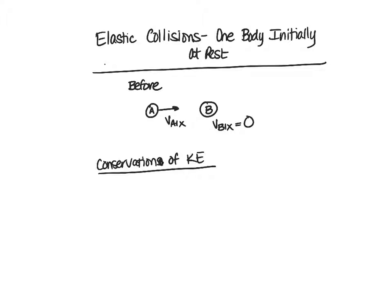We have two objects. Object A and Object B are going to collide. We are going to make this a one-dimensional problem, so everything's going to move along the x-axis. The initial situation is body B is at rest, and body A is going to run into it with its initial velocity.